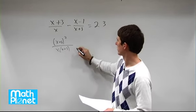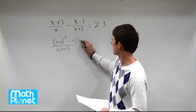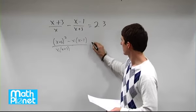And then we have x times this quantity, so minus x times x minus 1, still equals 23.